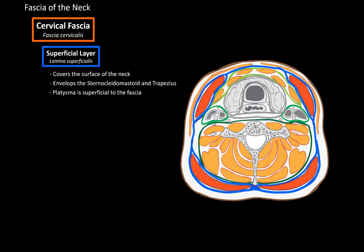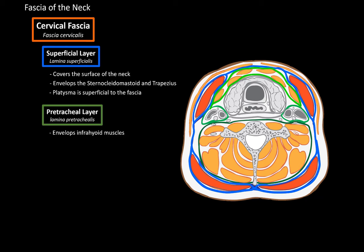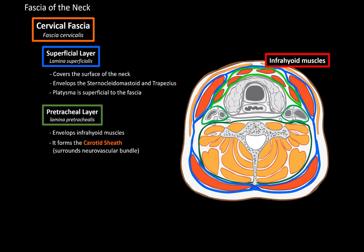Another layer of the cervical fascia is the pretracheal layer, highlighted in green. The pretracheal layer envelops the infrahyoid muscles — such as the sternohyoid, sternothyroid, and thyrohyoid. It then continues backwards to form the carotid sheath, called the vagina carotica, which surrounds the large neurovascular bundles on either side of the neck — specifically the common carotid artery, internal jugular vein, and vagus nerve.